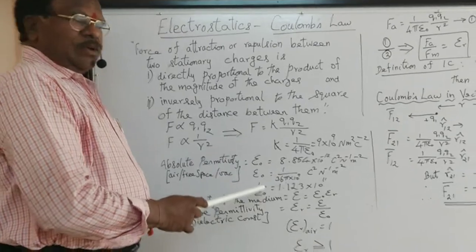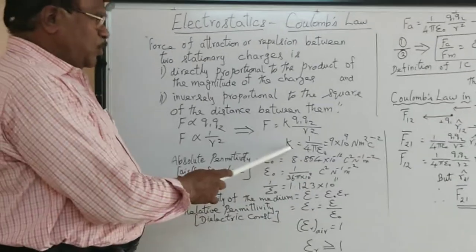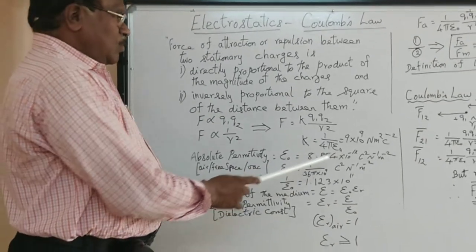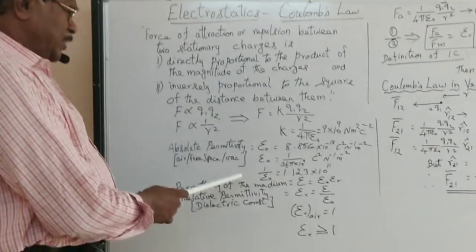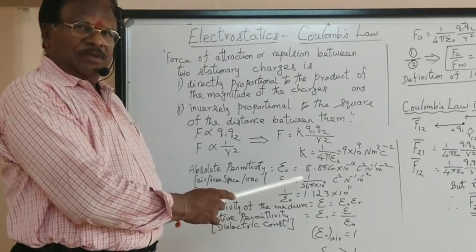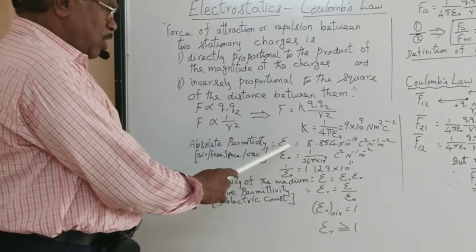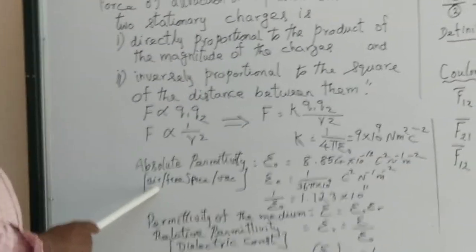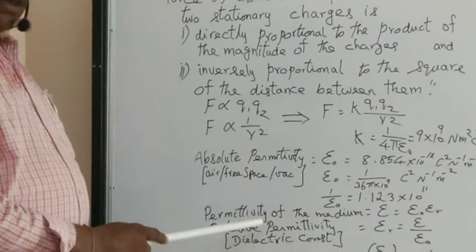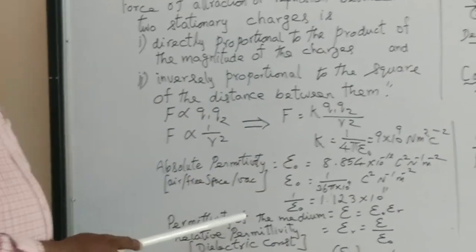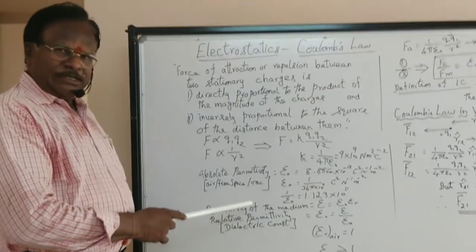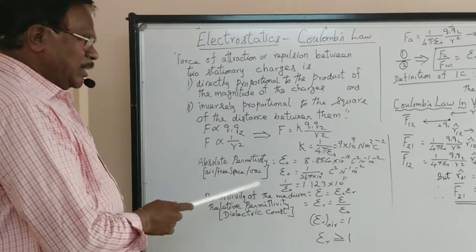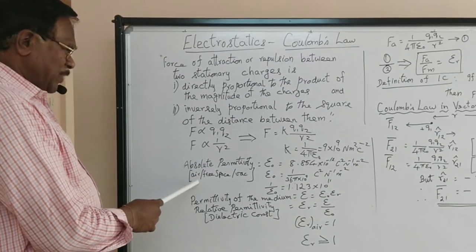The electrostatic constant, or proportionality constant, is given by 1/(4πε₀). Here ε₀ is called epsilon naught, which is the permittivity of air or free space — or vacuum. Air is a medium; vacuum is the absence of anything. For both, the value is essentially the same; the difference is highly marginal, so we don't take the difference into consideration.